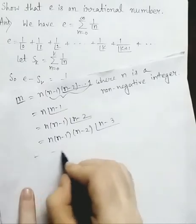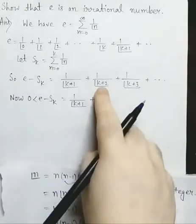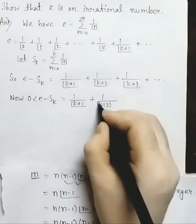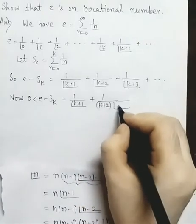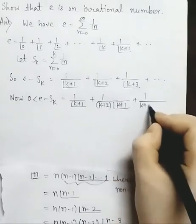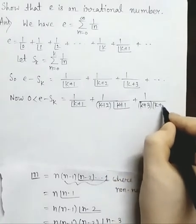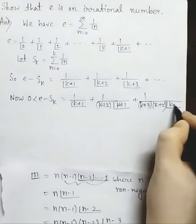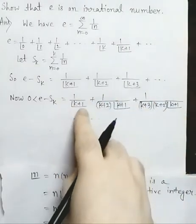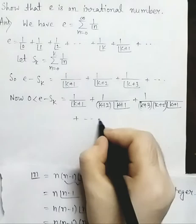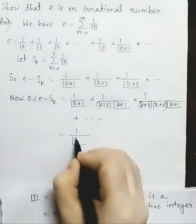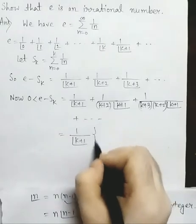We use this property here. Now 1 by factorial of k plus 2 can be written as 1 over k plus 2 into factorial of k plus 1. Similarly, 1 by factorial of k plus 3 can be written as 1 over k plus 3 into k plus 2 into factorial of k plus 1, and so on. Taking 1 by factorial of k plus 1 as a common factor gives a simplified expression.